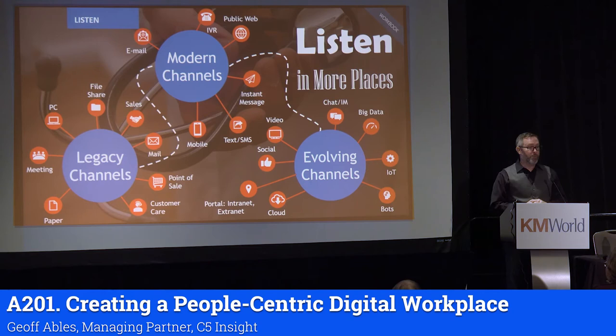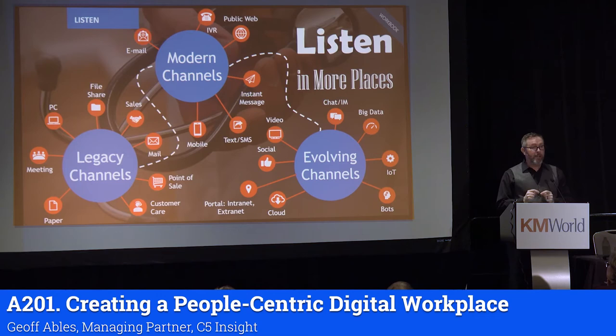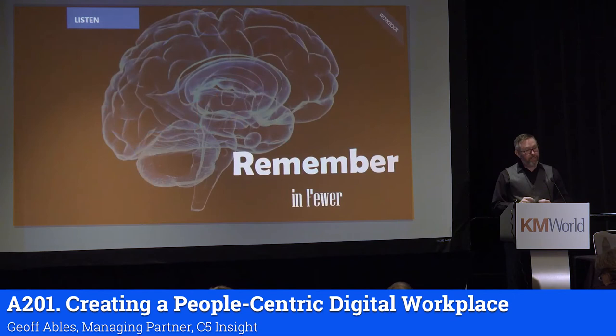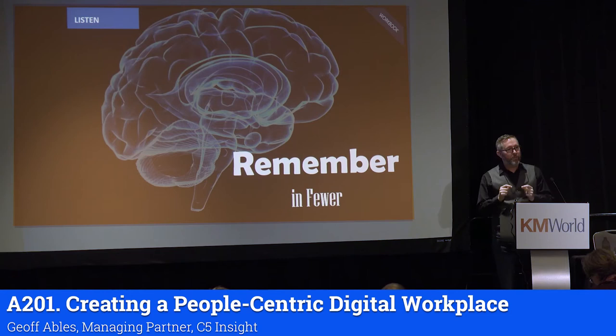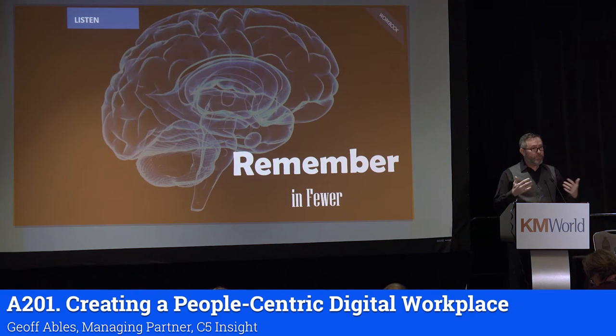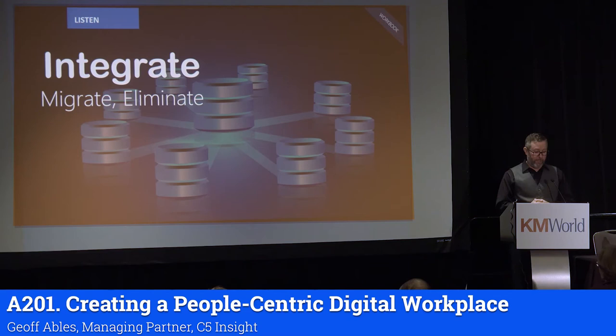There are amazing vendors who talk about how to bring all of those things together. Here's the real answer: we need to listen in all of these places — there will be more and more ways and places to listen to our people, including IoT-type applications. But what we really need to do is remember in fewer places, and give people fewer places to go to access the information they need to get their jobs done. The ones doing well are saying we're going to either — number one — integrate, or — number two — migrate and eliminate.